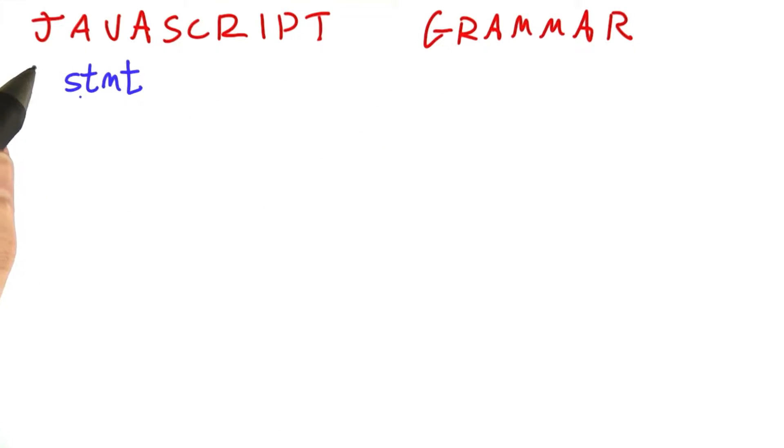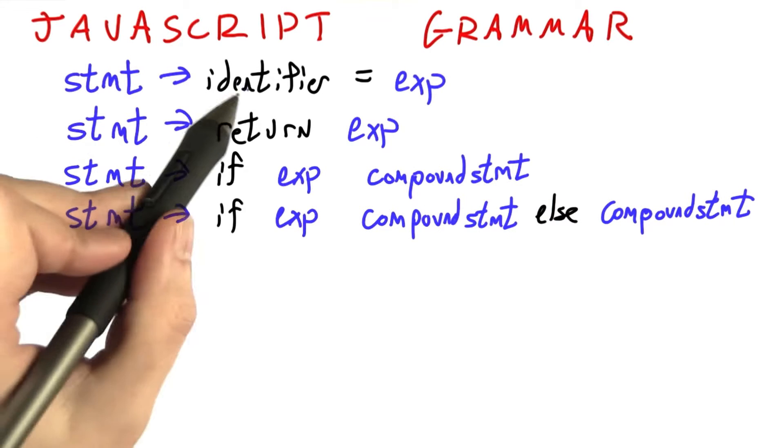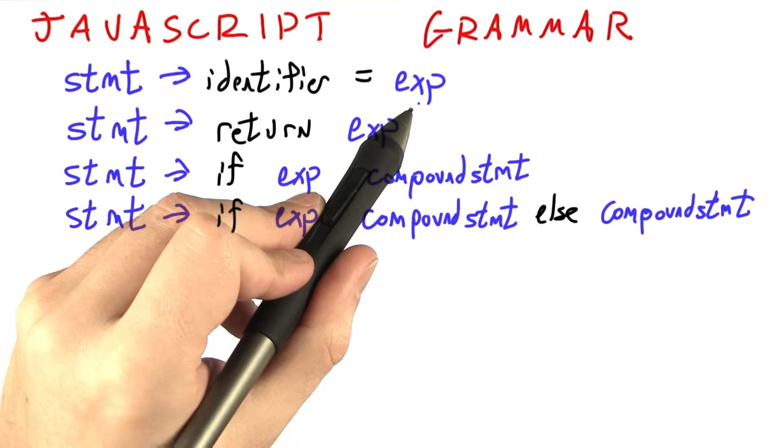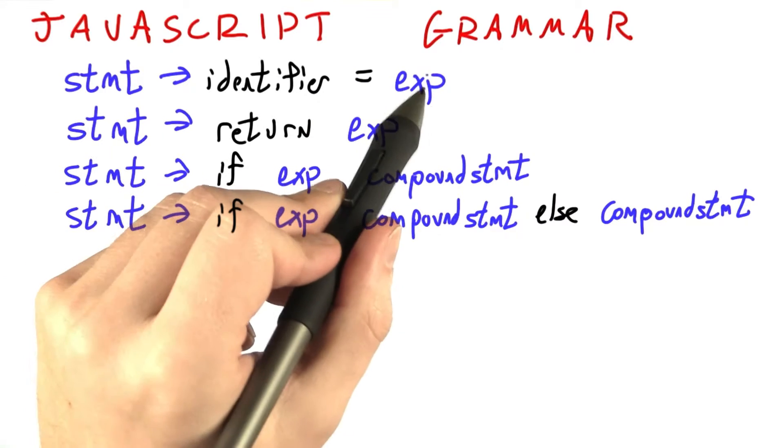So now that we have an intuition for statements, let's add them to our JavaScript formal grammar. One of the most common kinds of statements is the assignment statement, where we have an identifier on the left-hand side of an equal sign, and then an arbitrary expression on the right. x becomes equal to 5.